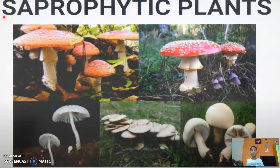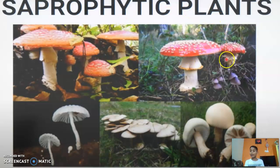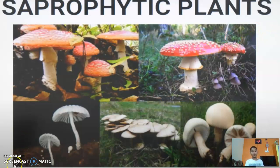The second type of heterotrophic plant is saprotrophic. Saprotrophic plants are those which feed on dead and decaying matter. A very good example of a saprotrophic plant is mushroom. It is also a type of heterotrophic plant.